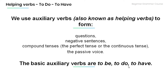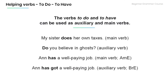The basic auxiliary verbs are 'to be,' 'to do,' and 'to have.' Note that 'to do' and 'to have' can be used as both auxiliary and main verbs. For example: 'My sister does her own taxes' — here 'does' is the main verb. In 'Do you believe in ghosts?' — 'do' is an auxiliary verb forming a question. In 'She has a well-paying job' — 'has' is the main verb; in 'She has got a well-paying job' — 'has' is an auxiliary verb.